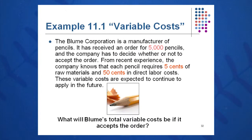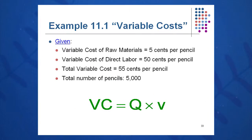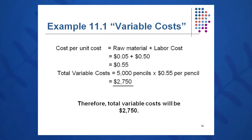Here's an example. A company has received an order for 5,000 pencils. Each pencil has 5 cents of raw material and 50 cents of direct labor cost. What is the total variable cost? It's very simple: quantity times variable cost per unit. 5,000 pencils times $0.55 per unit — I get $0.55 by adding the 5 cents of raw material and 50 cents of labor — giving a total variable cost of $2,750.